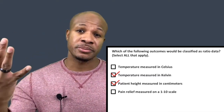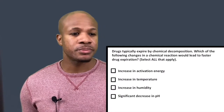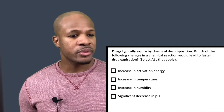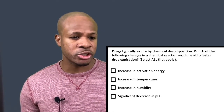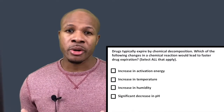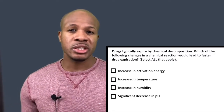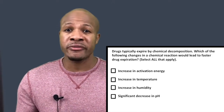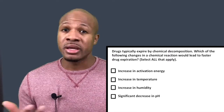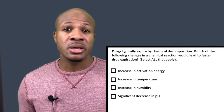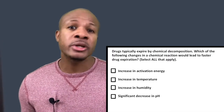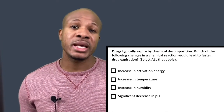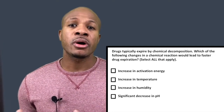Let's go on to question number three. Question number three states: drugs typically expire by chemical decomposition. Which of the following changes in a chemical reaction will lead to faster drug expiration? Select all that apply. Whenever a manufacturer makes a drug, the shelf life of that drug is determined by how quickly it decomposes. There are many different factors — it can decompose through oxidation or through hydrolysis by interacting with water. We're being asked to select the chemical parameters that will cause a drug to degrade faster.